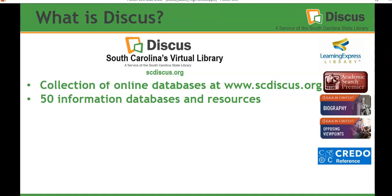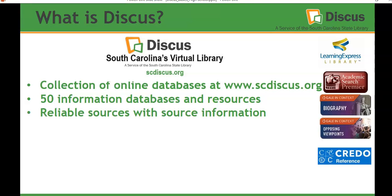There are over 50 information databases and resources, and about 30 of those are relevant to the high school level. You will find reliable sources with source information. If you go out to the general web or Google and find some good information but can't figure out what it is, when it was published, or who was responsible for it, it starts becoming questionable as to whether or not it is a credible source. But within Discus, you have published, reliable, credible sources together with the source citation information. You have no textual ads or video ads to wait through before you can view a video.